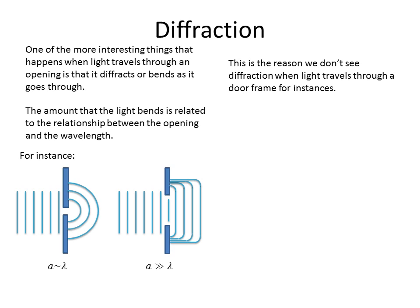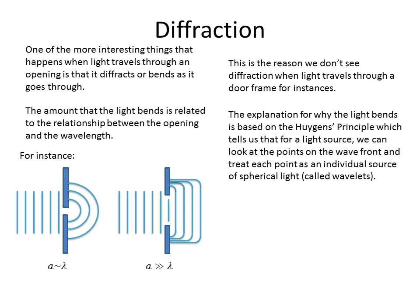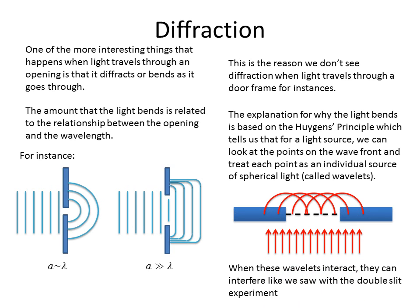So if our opening is much larger than our wavelength, we tend to not get a lot of diffraction on the side. This is the reason why, when we see light coming through, we don't normally see light diffracting when it goes through a doorway, for instance. The reason why it bends is based on Huygens' principle, which tells us that if we look at the edge of where the light stops, then any point along this edge we can treat as a bunch of small spherical light sources, which we call wavelets.